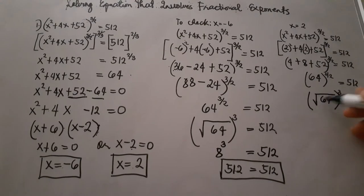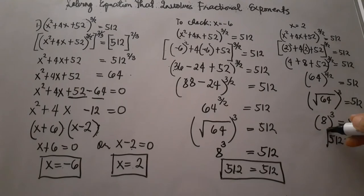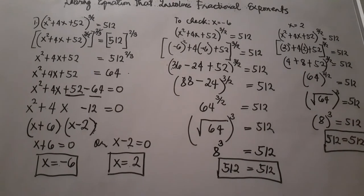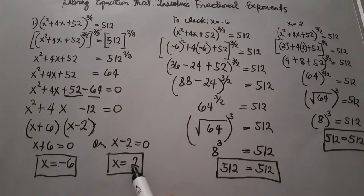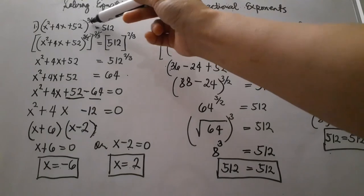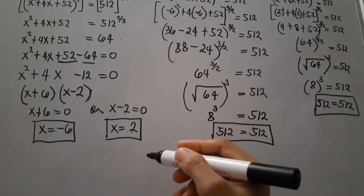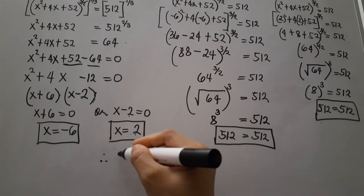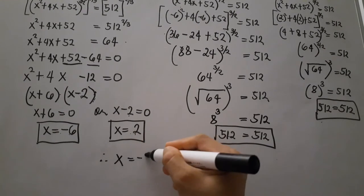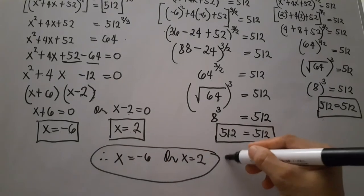The square root of 64 is 8, raised to the power of 3 is equal to 512. So 8 cubed equals 512, and 512 equals 512. This means x equals 2 is correct. Therefore our answers are x equals negative 6 or x equals 2.